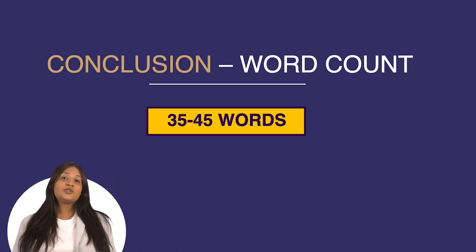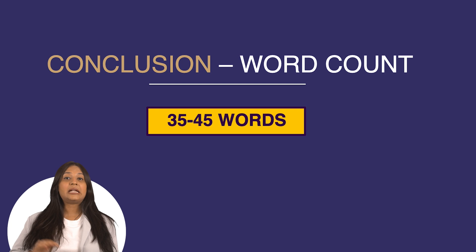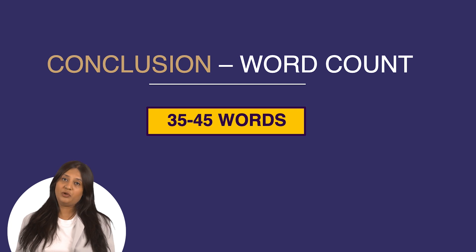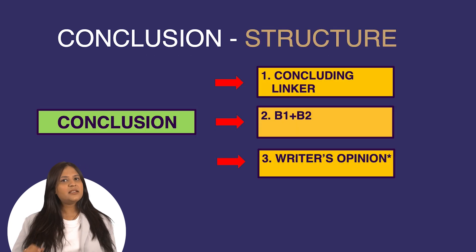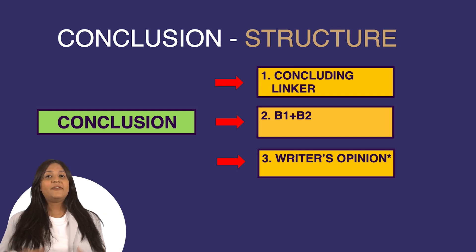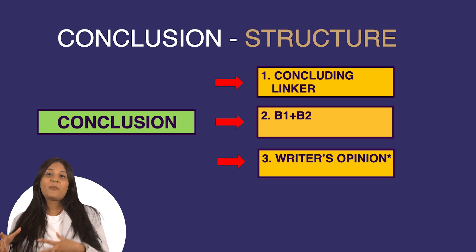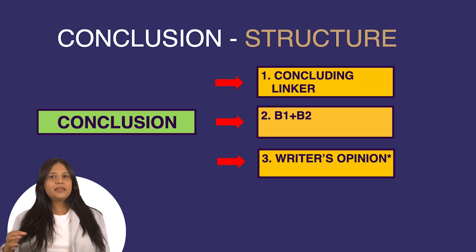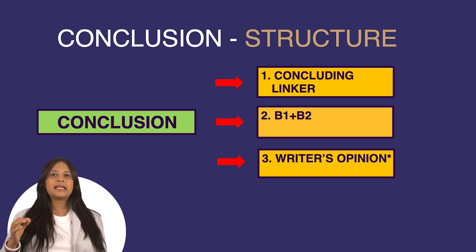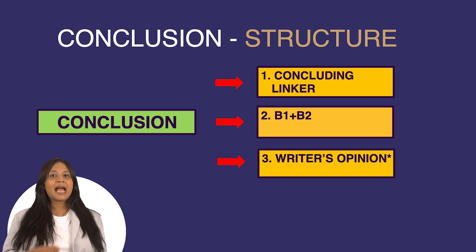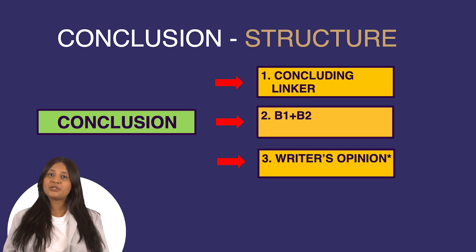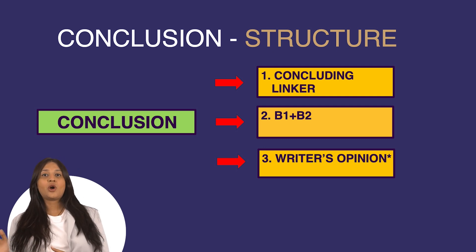The conclusion paragraph should be written within 35 to 45 words. It should be concise, as its name suggests. Here's the basic structure of the conclusion: every conclusive paragraph should have a linker in the beginning to clearly signal the reader that this is the summary and the essay ends here. The linker helps in signposting and also contributes to the progression of the essay.